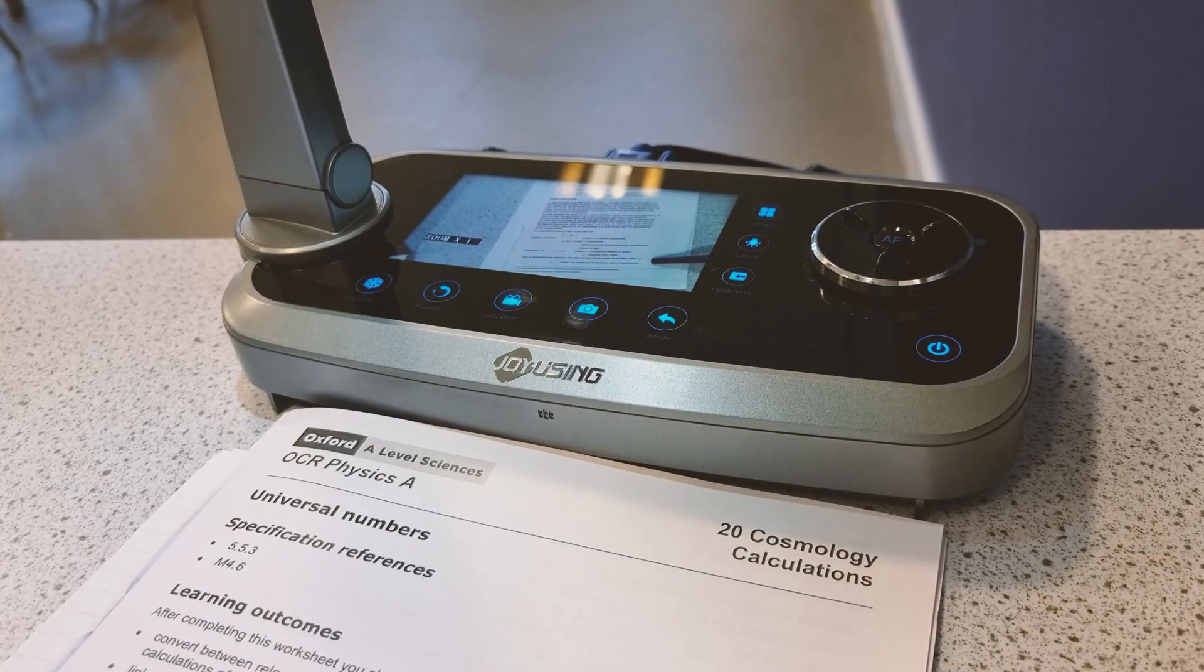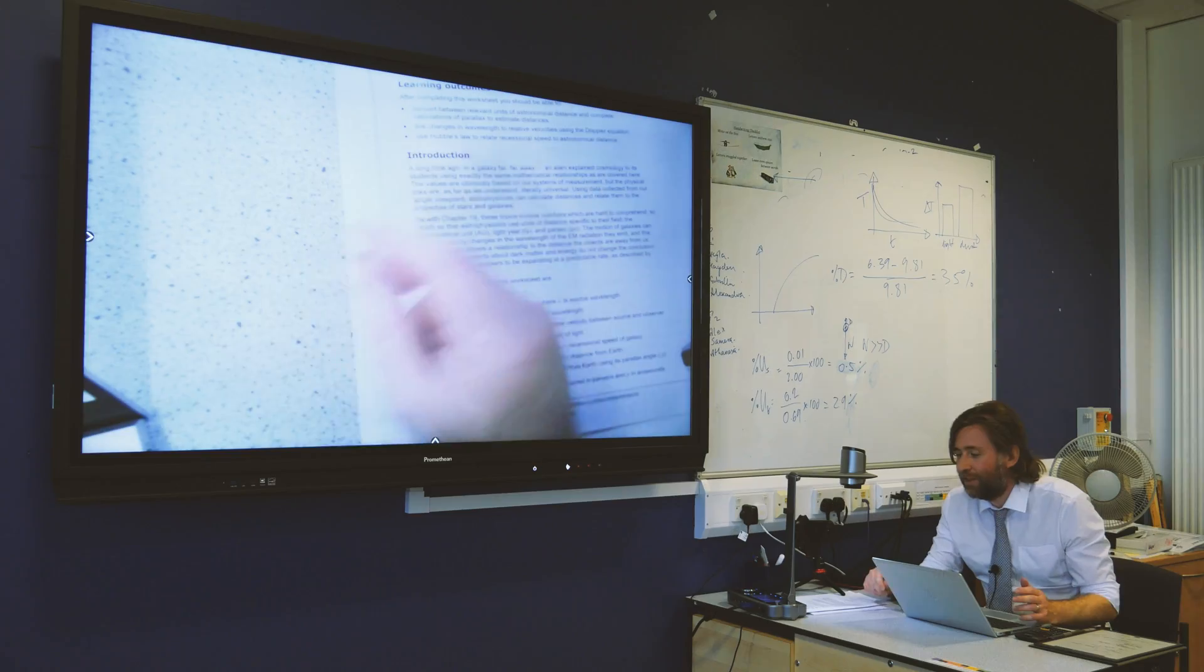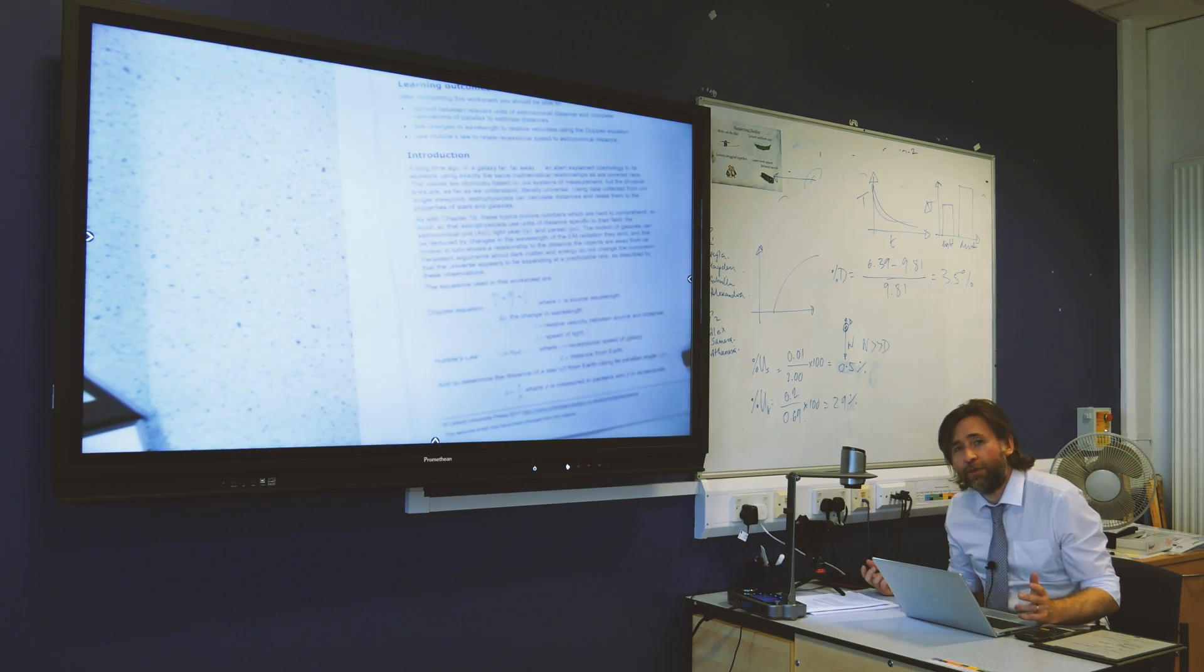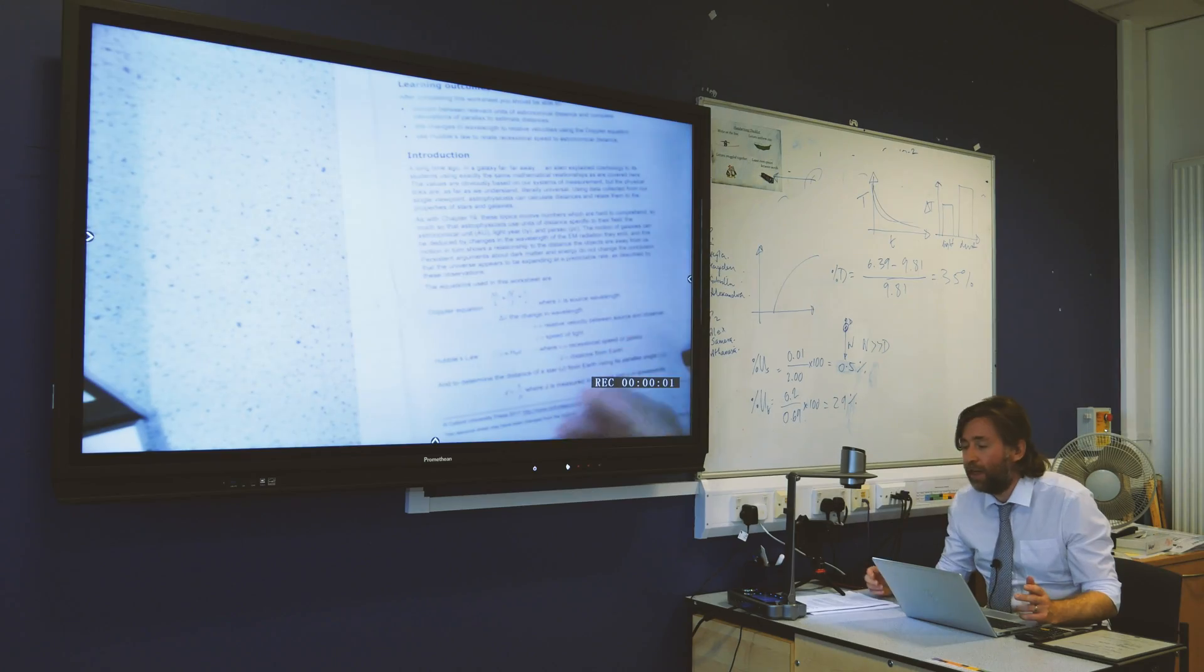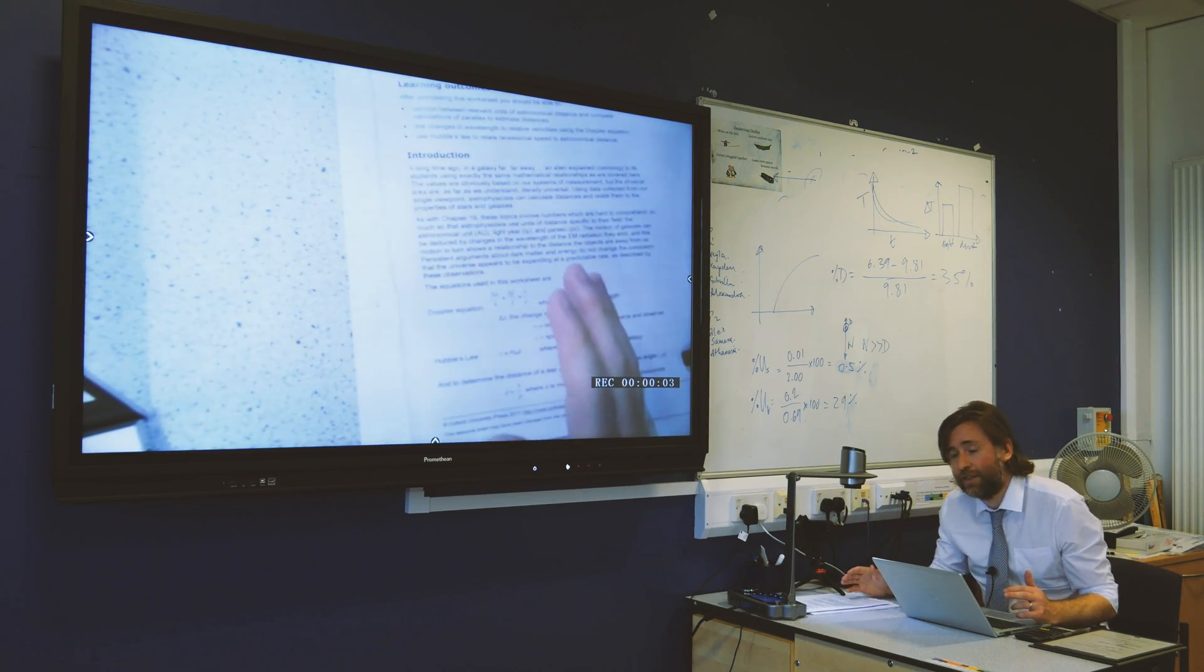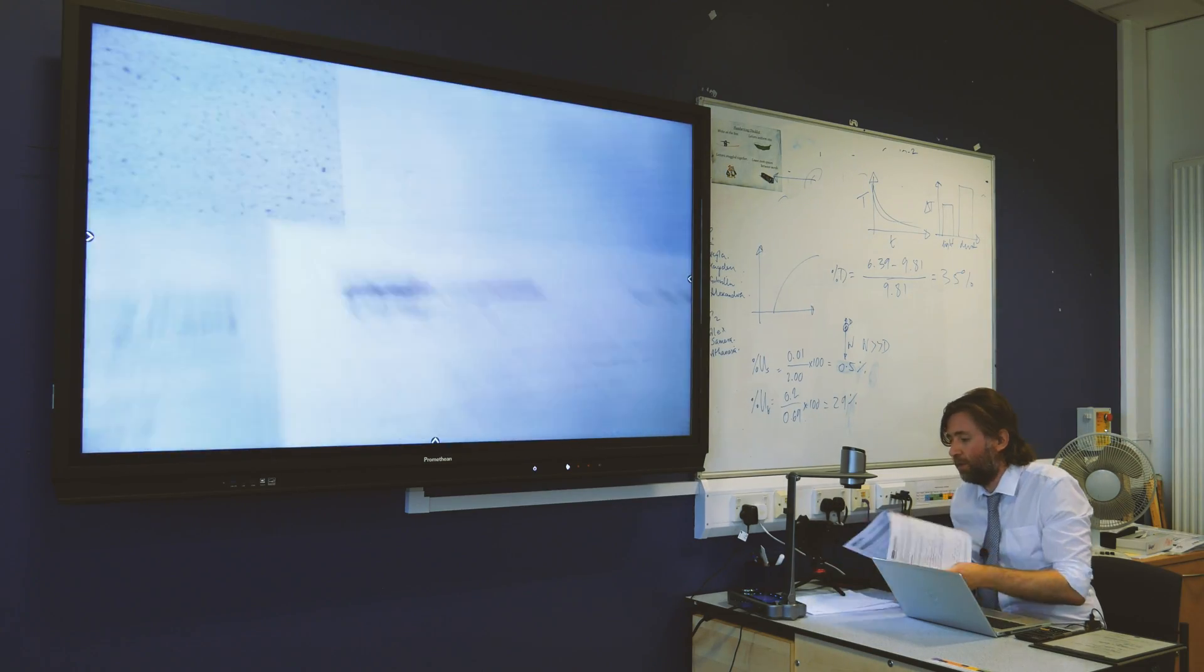Thanks so much to Joyusing for sending out this visualizer, this is the V1X. It's really their flagship model. There's so many things to like about it. For example, you can record your screen with just one button and it's now recording a video to the SD card. Or if you didn't want a motion video and you just wanted to make a snapshot of your work that you were doing, then you can just make a quick snap like that and you've got a photo to use later.